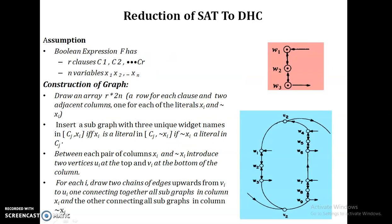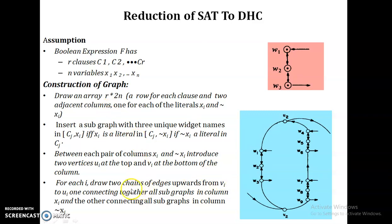The procedure for reduction of SAT to DHC is as follows. The input is an expression f with r clauses and n variables. First, construct a graph array with r rows for r clauses and 2n columns, since each variable appears as both a positive and a negative literal. For each variable, create a pair of nodes ui at the top and vi at the bottom, and draw a line from vi to ui for both the positive and negative literal positions.